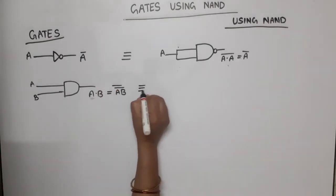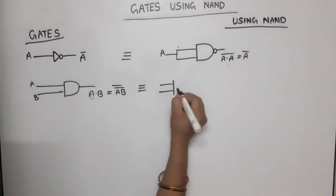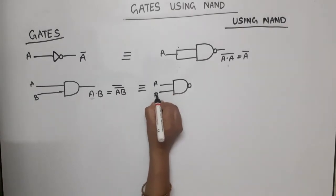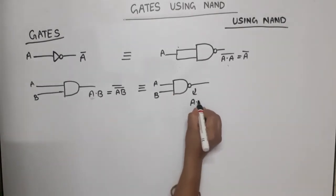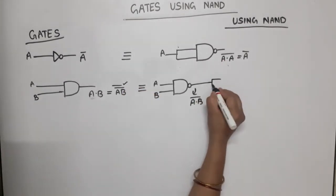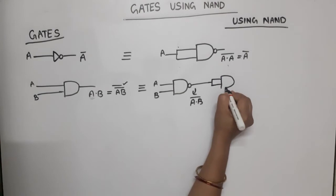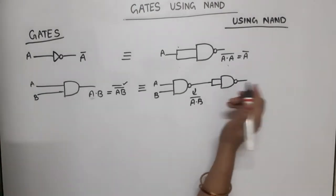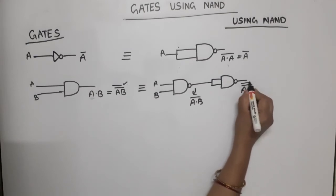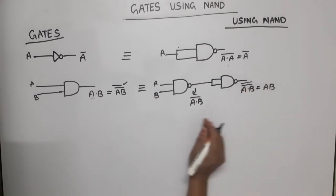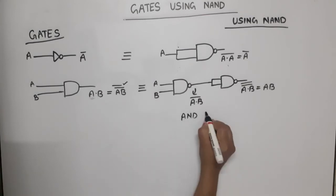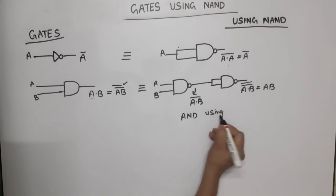To implement this, first we make one NAND gate with inputs A and B; output is A dot B bar. Then we need one more complement, so we use one more NOT gate using NAND only. Input is A dot B bar, and output is A dot B bar bar, which is equal to A dot B. This is AND gate using NAND.